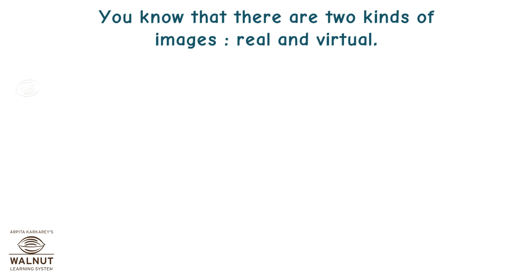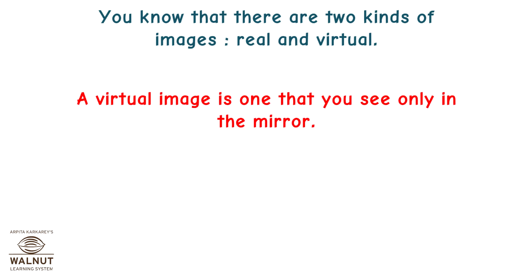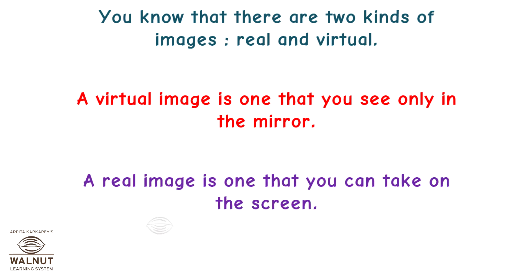There are two kinds of images: real and virtual. A virtual image is one that you see only in the mirror. A real image is one that you can take on a screen.